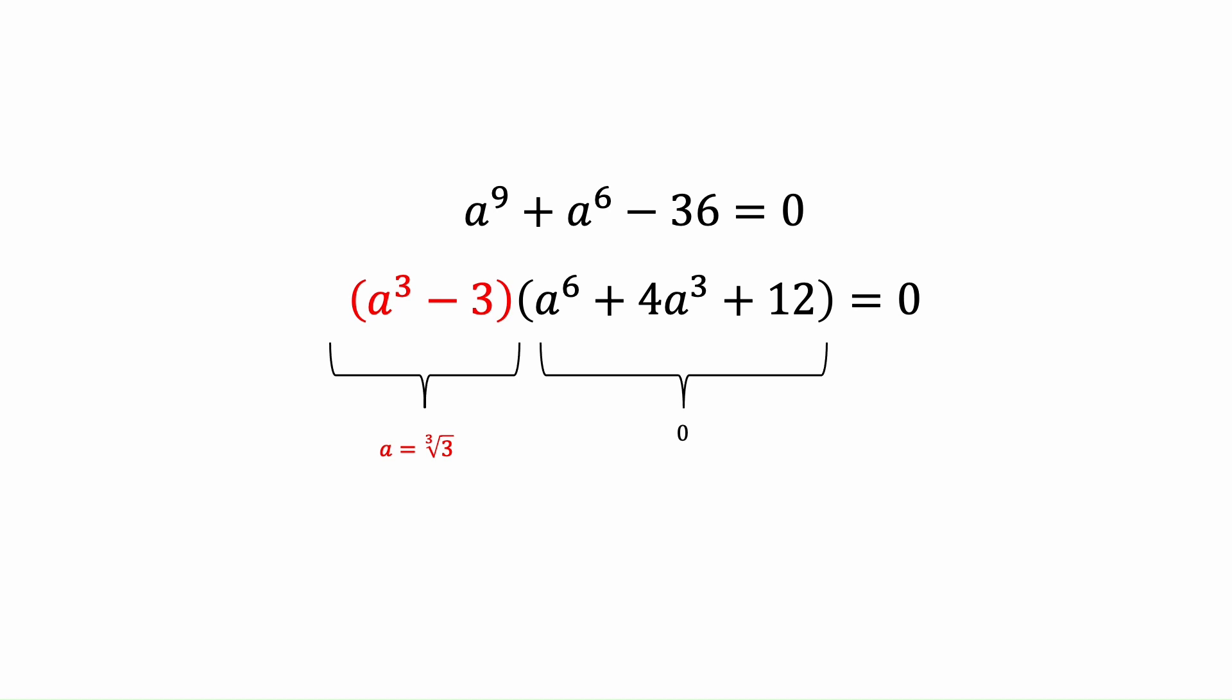For making the first parentheses equals to 0, a is going to be cube root of 3. For solving the second parentheses, we need another changing variable. For example, we assume a to the power 3 equals to x.